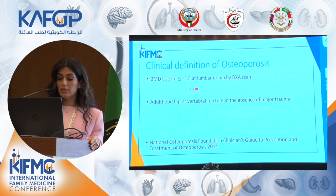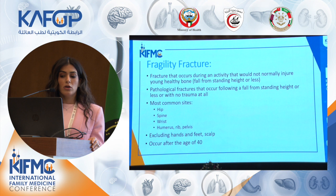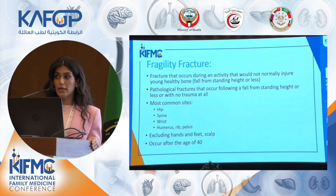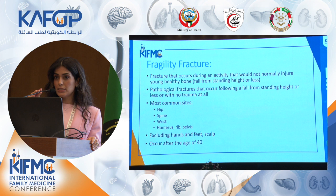Fragility fractures are fractures that occur during an activity that would not normally injure young, healthy bone — for example, falling from standing height or less. They are pathological fractures that occur following minimal trauma or no trauma at all. The most common sites of fractures are the hip, the spine, the wrist, the humerus, the pelvis, and the ribs.